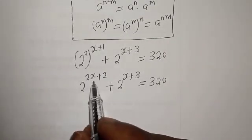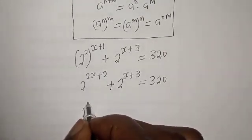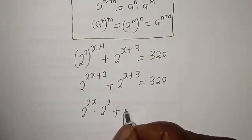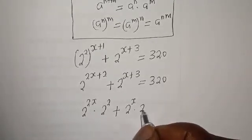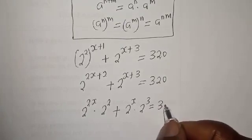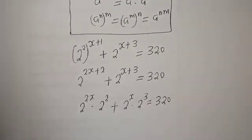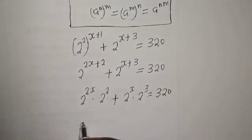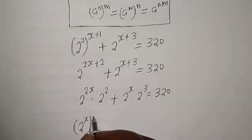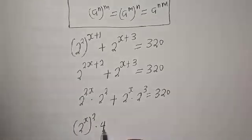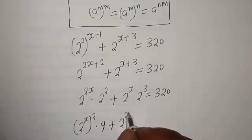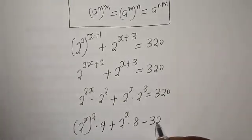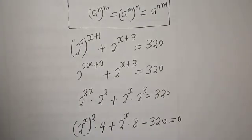From here, we have 2 raised to power x plus 2, plus 2 raised to power x plus 3, is equal to 320. This can be written as 2 raised to power x squared, multiplied by 2 squared which is 4, plus 2 raised to power x multiplied by 2 raised to power 3 which is 8, minus 320, is equal to 0.